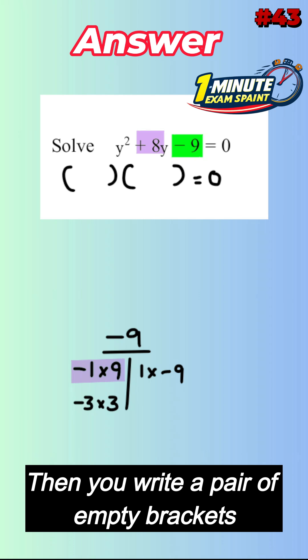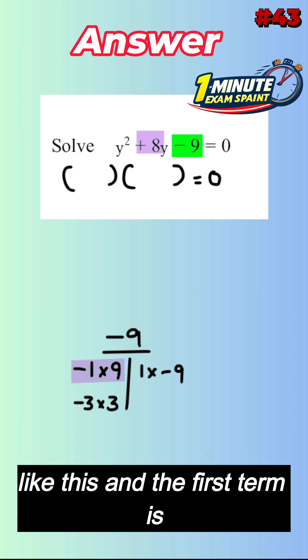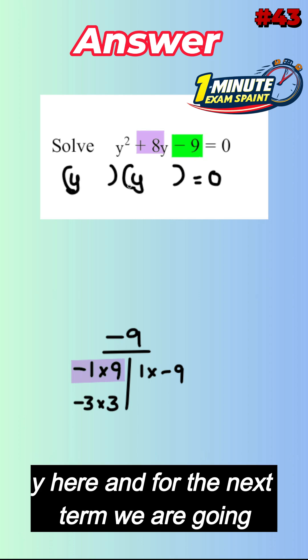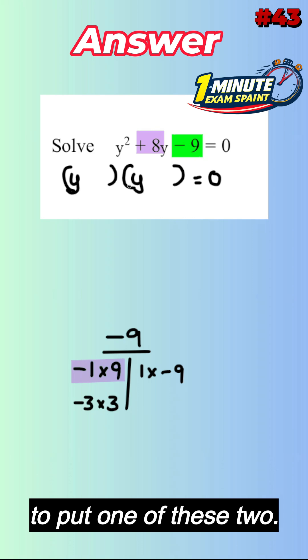Then you write a pair of empty brackets like this, and the first term is y here. And for the next term, we are going to put one of these two.